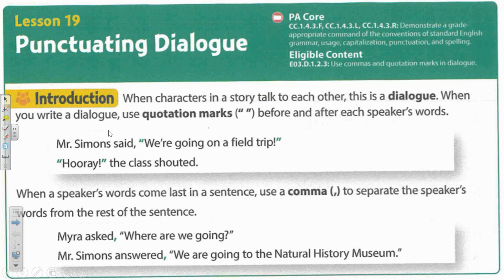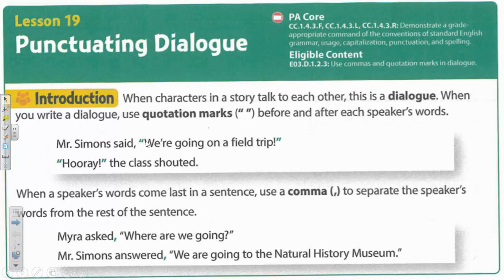When you write a dialogue, use quotation marks before and after each speaker's words. For example, Mr. Simmons said, comma, open quotation marks, we're going on a field trip, and close the quotation marks after the speaker's words.